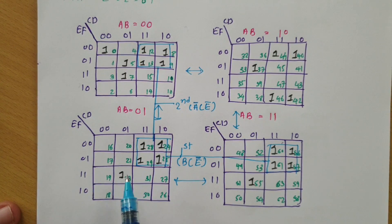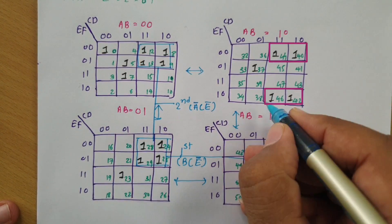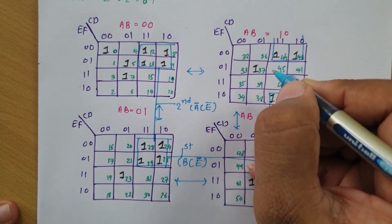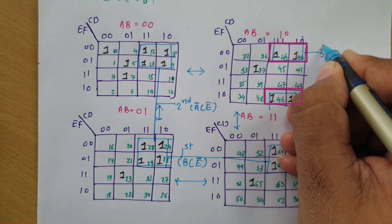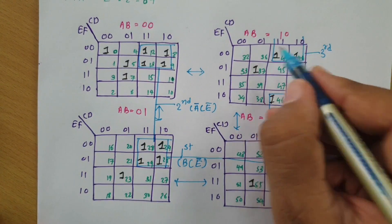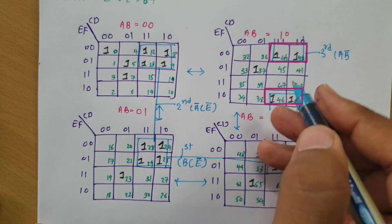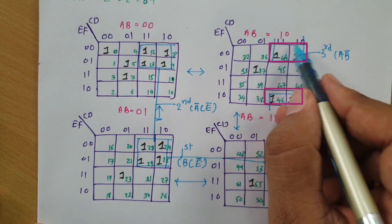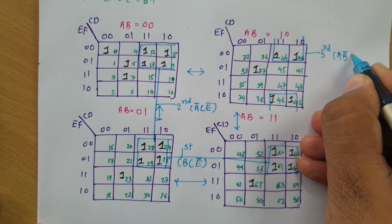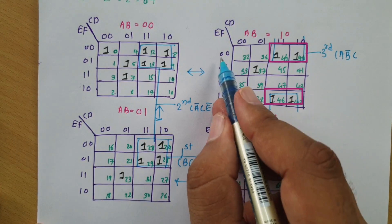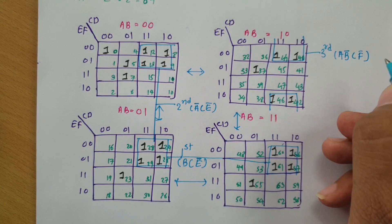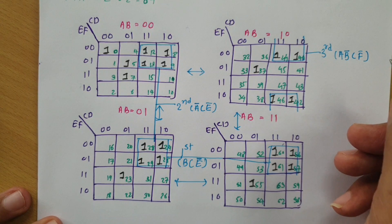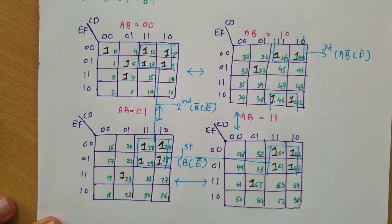Now I need to find the next largest group. I can see a four-cell group forming here — this is my third group. This group has AB as 10, meaning A·B̄. Observing CD: it is 11 and 10, so C is 1 and D is changing. For EF: 00 and 10, so F is 0 meaning F̄. So the third group gives A·B̄·C·F̄.